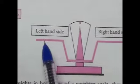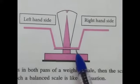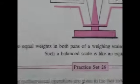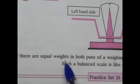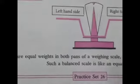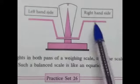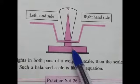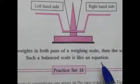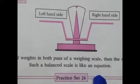Look at here. Left hand side and right hand side. This is the weighing scale. If there are equal weights in both pans, both pans are equal weight of a weighing scale, then the scale is balanced. Such a balance scale is like an equation.